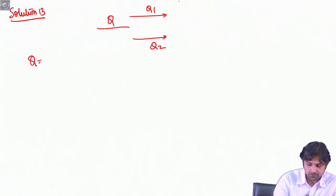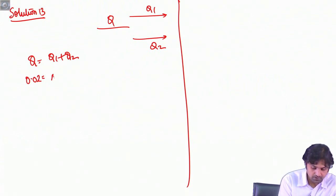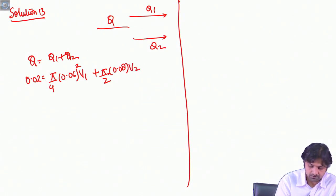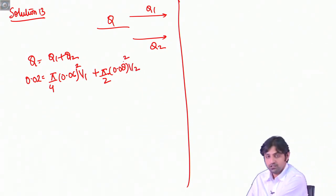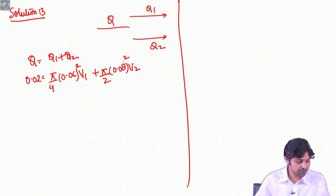Applying continuity: Q = Q1 + Q2, so 0.02 = π/4·(0.06)²·V1 + π/4·(0.08)²·V2. This gives us the discharge continuity equation.